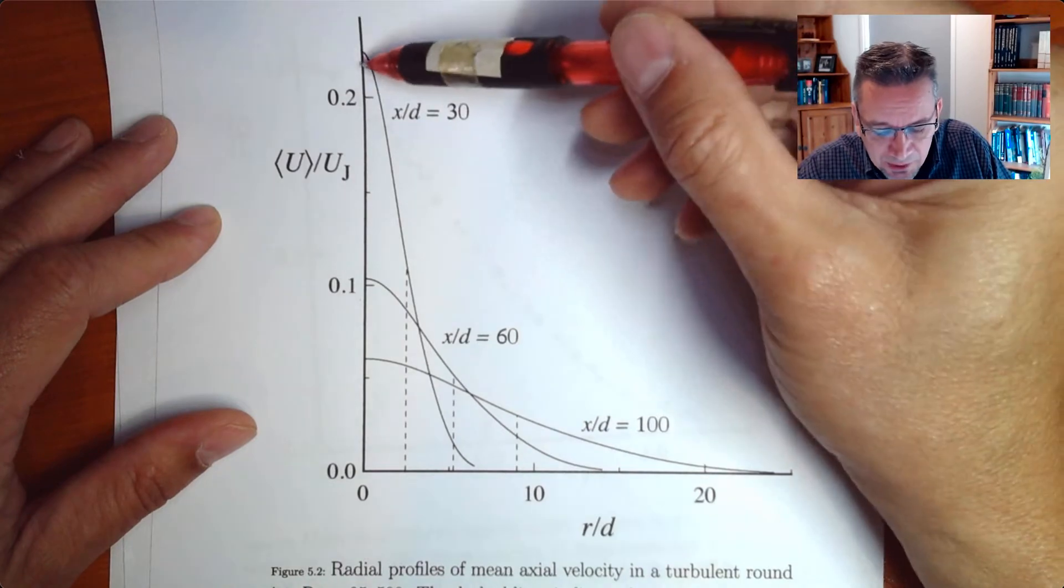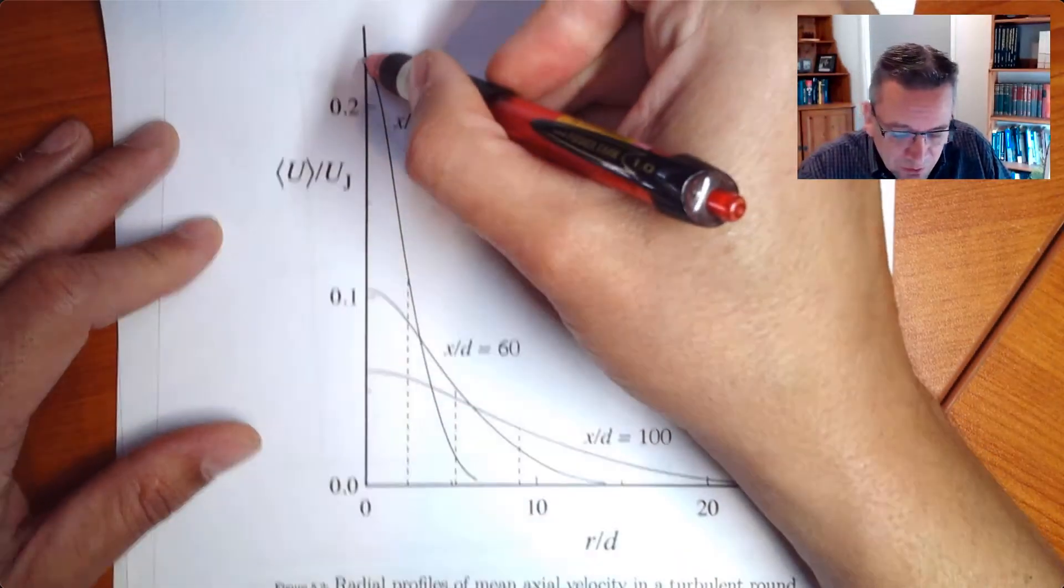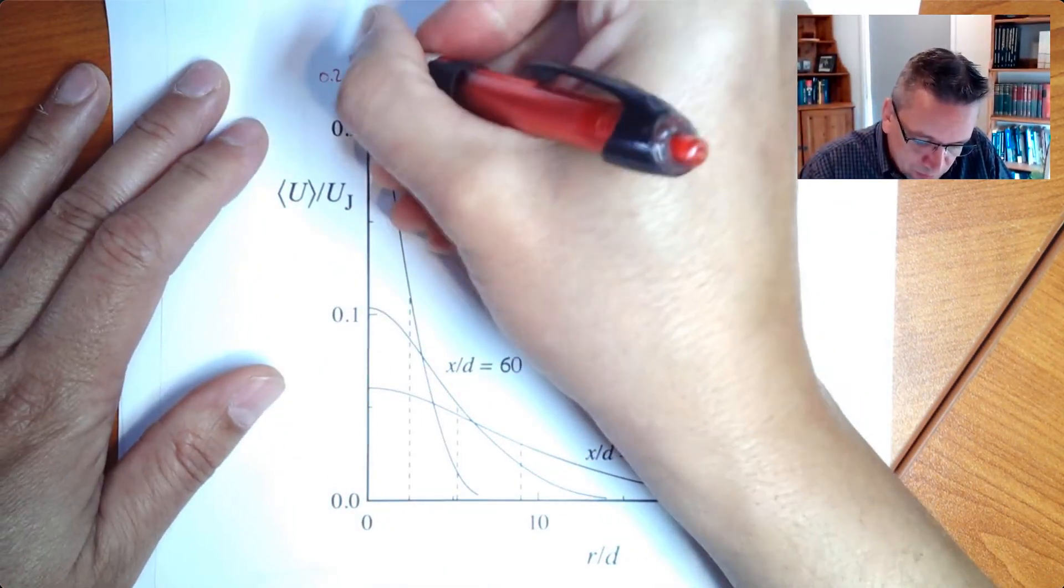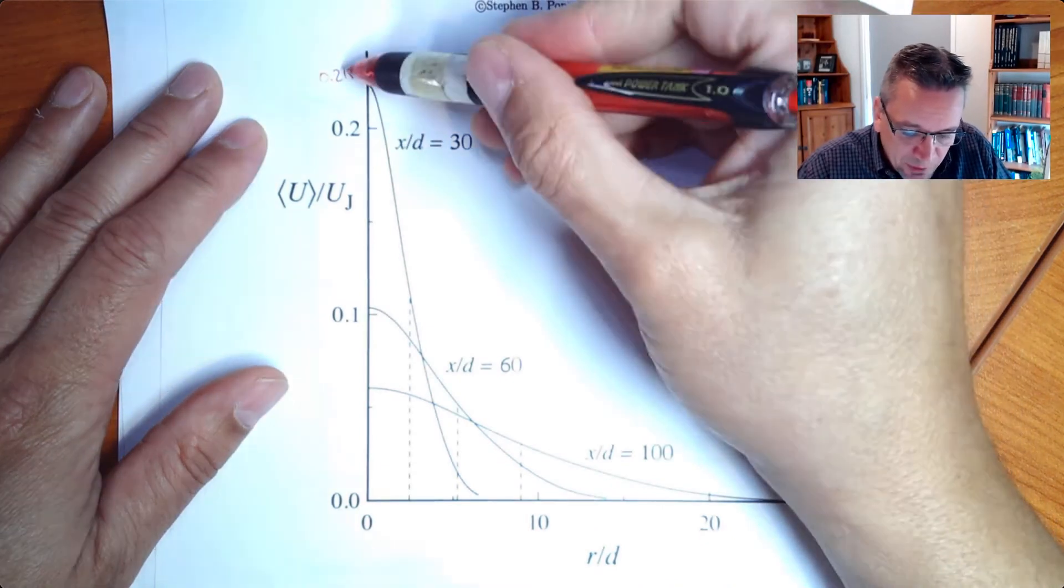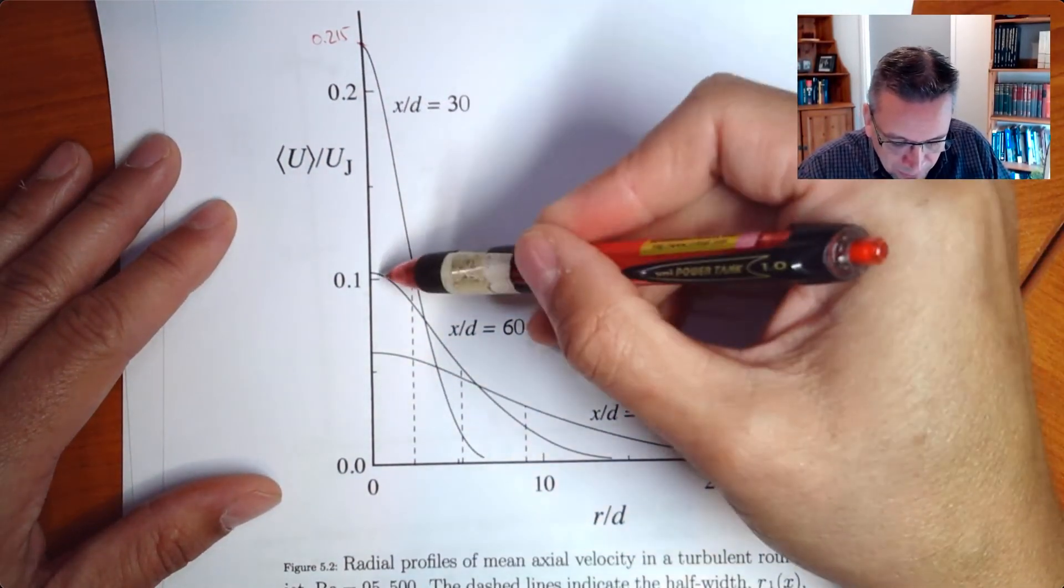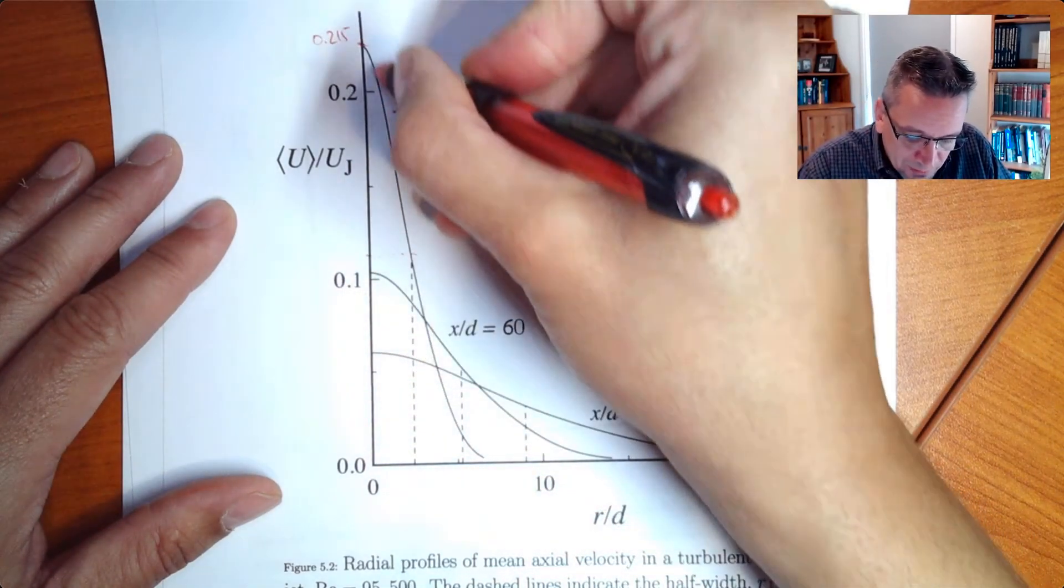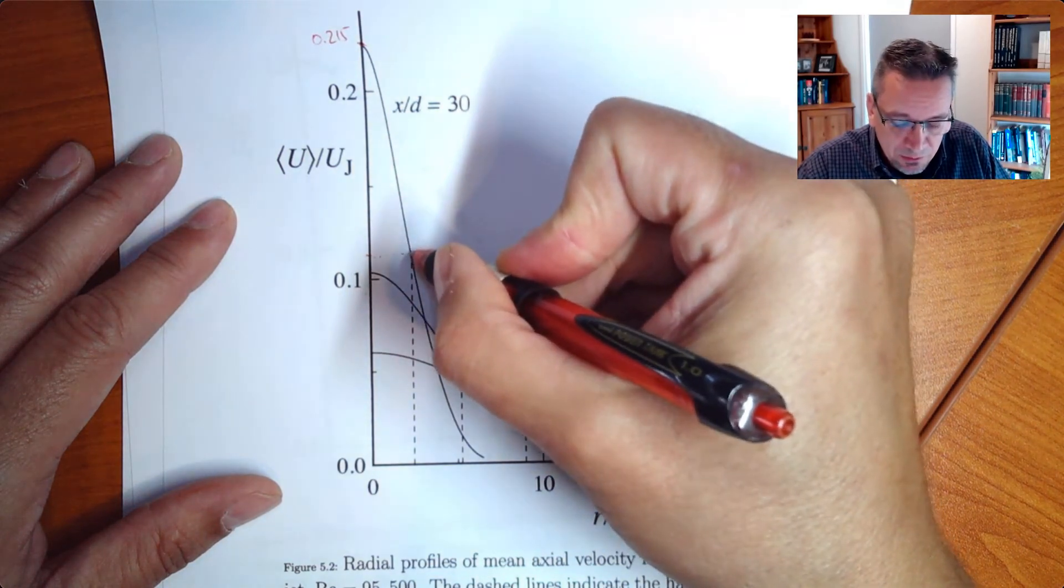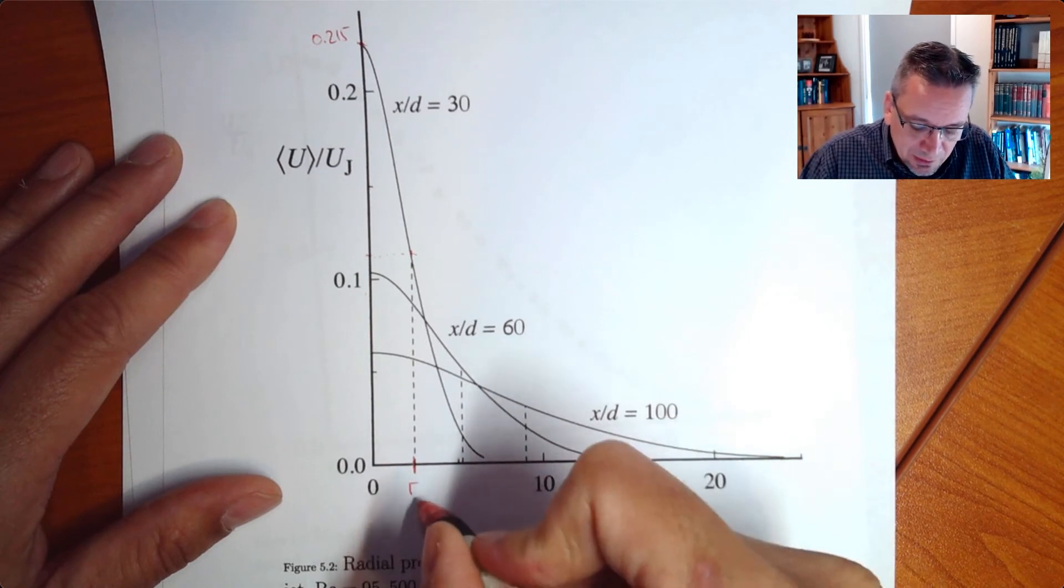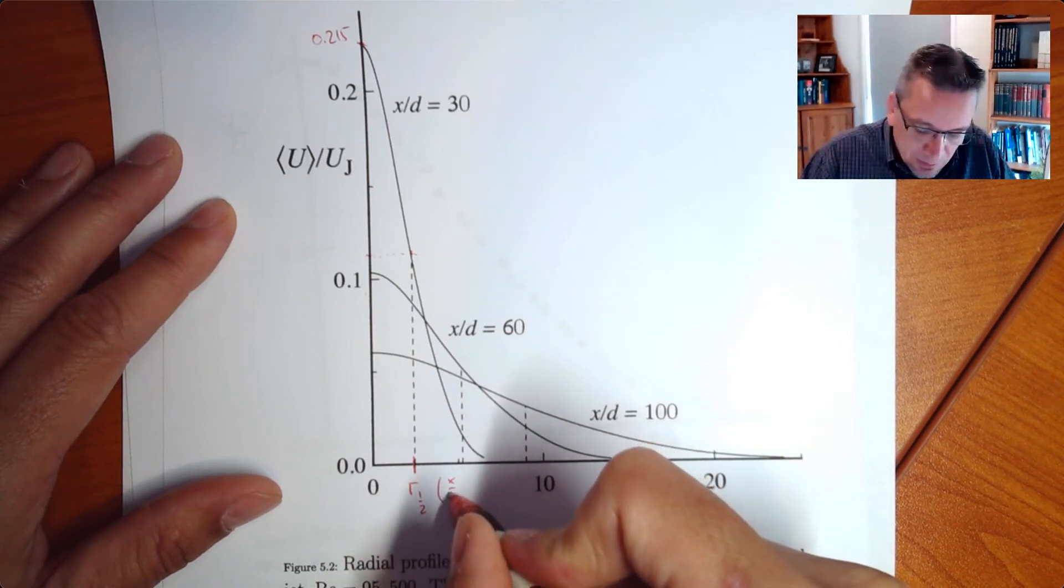So what can be done now is that you find out what is the half width of the jet. So you see here this one is let's say 0.215, so half of that would be 0.1075. So it would be somewhere over here and you see where this one is going to meet these two. And then you see that this one is now the half width of the jet for x over d equals 30.